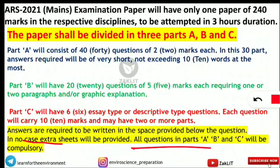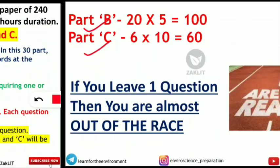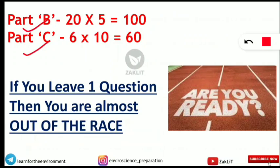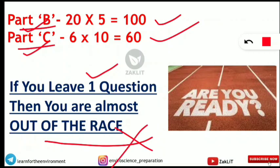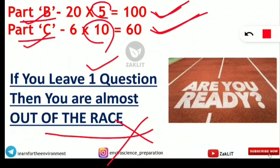Now we will know the most important parts. I would suggest you start with the paragraph type or essay type questions first, because this is a race — a very important race for the scientist position. If you leave one question from Part B or Part C, you are almost out of the race, because each question carries 5 or 10 marks. If you leave Part A short answer questions, you will not be losing as many marks. But if you miss a Part B or Part C question, you will be almost out of the race.